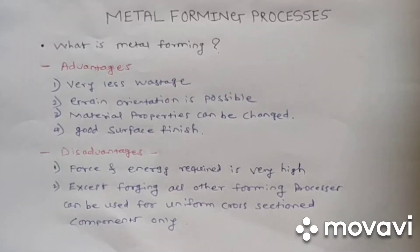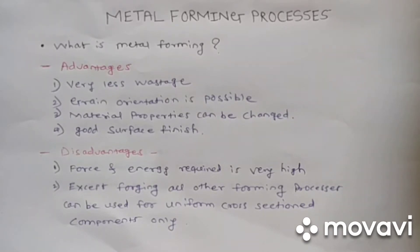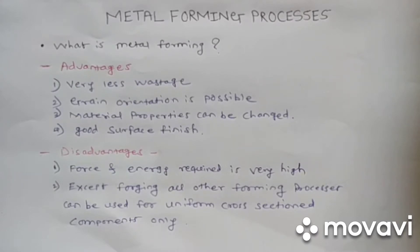In metal forming, the force applied on the body is such that it is greater than the yield strength of the material but lesser than the ultimate strength. This means the material experiences plastic deformation, which is permanent deformation. We push the material beyond its yield strength so there is no elastic recovery.